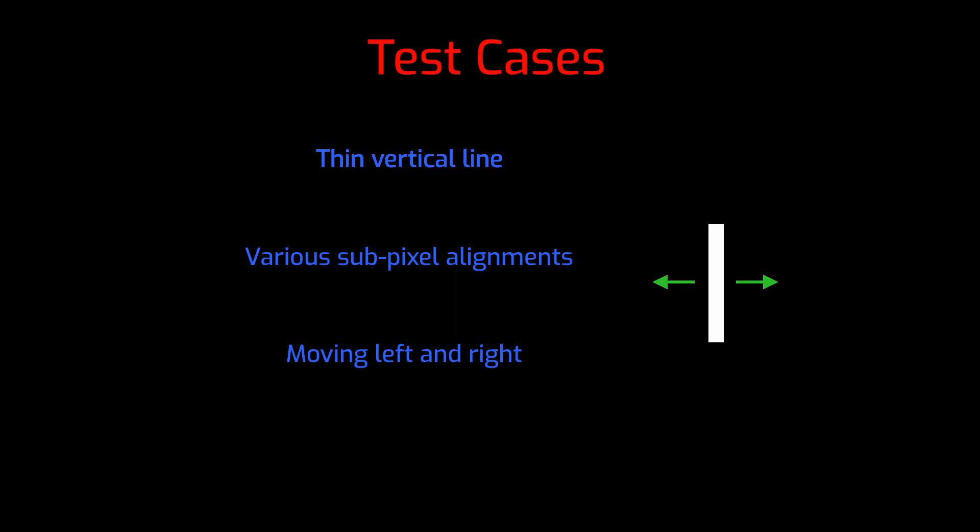I'm going to start by setting up a couple of test cases: some static lines that don't animate but are on different alignments with the pixel grid, and one animating pixel line. Once I've got that test stuff up and running, we'll go on and look for ideas of what solutions there might be to this problem.